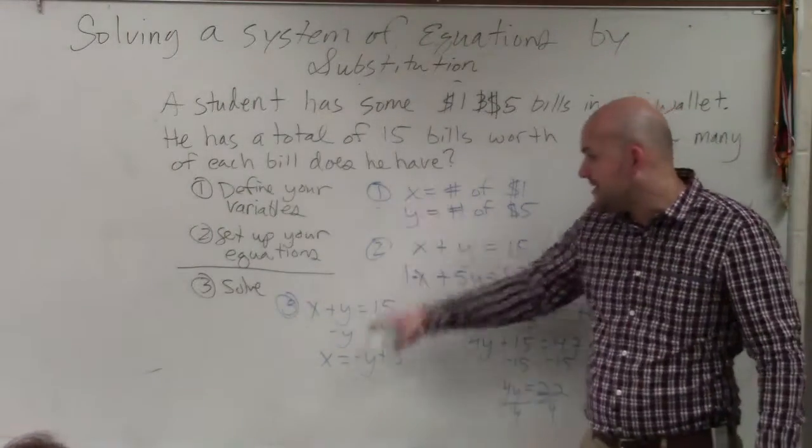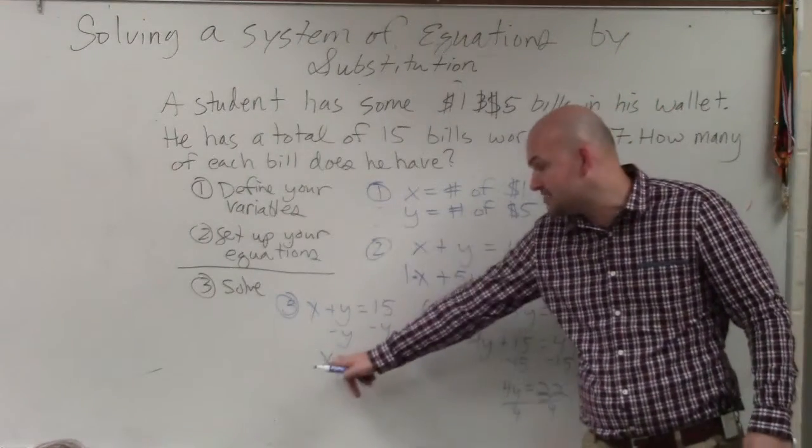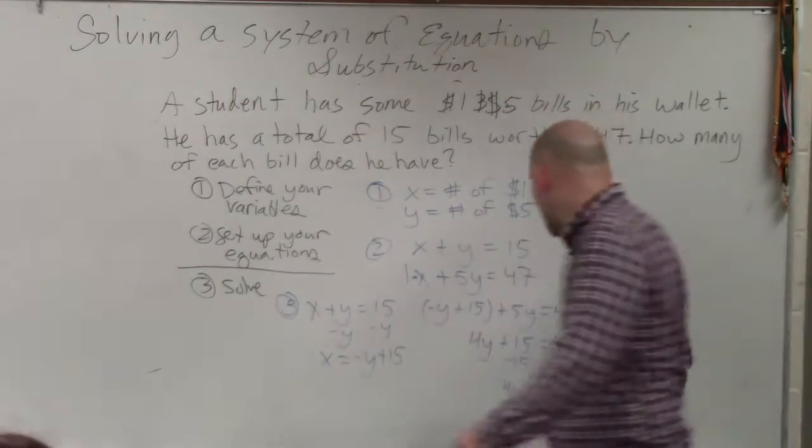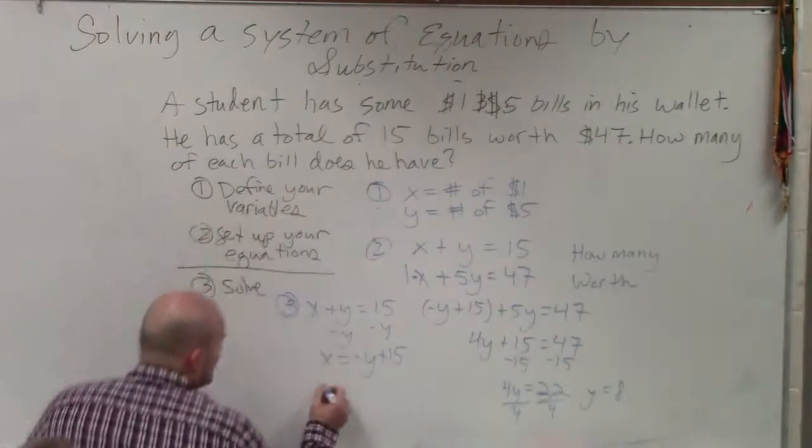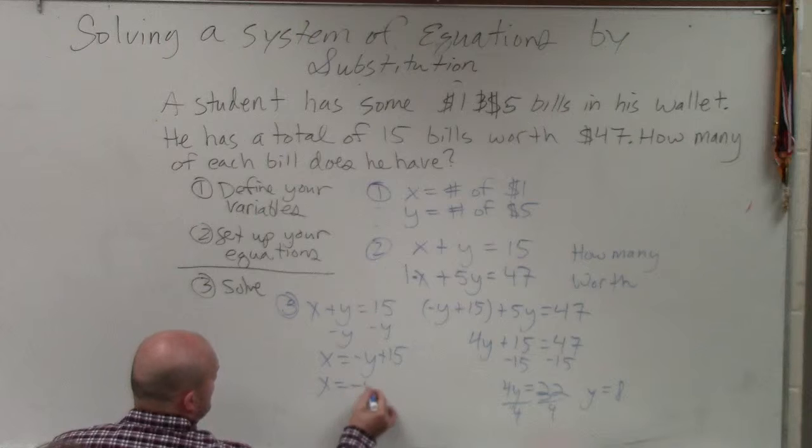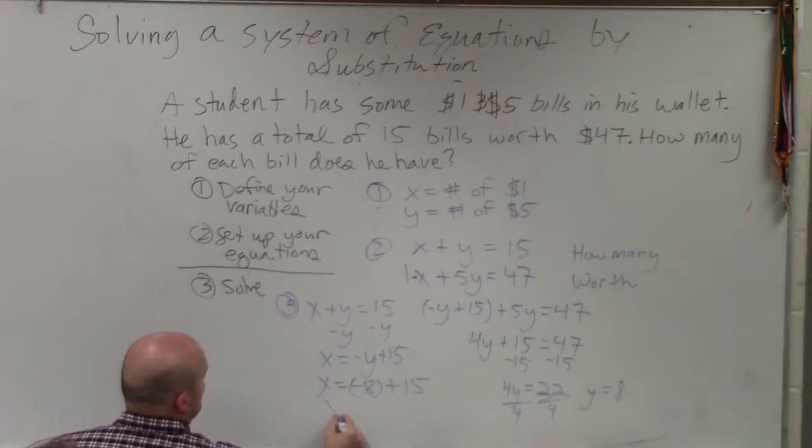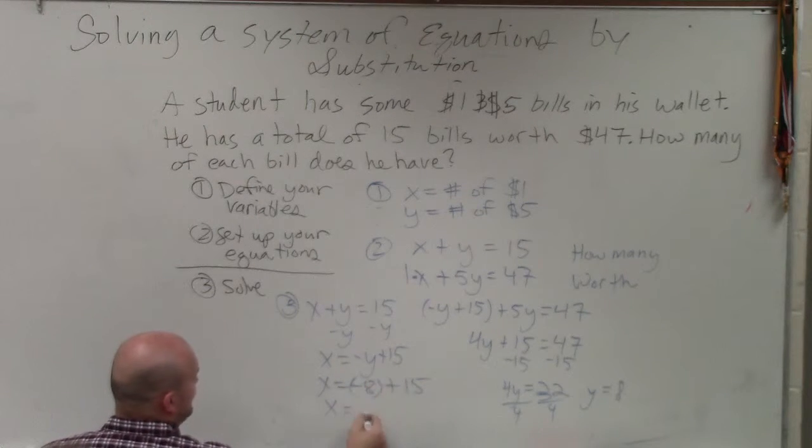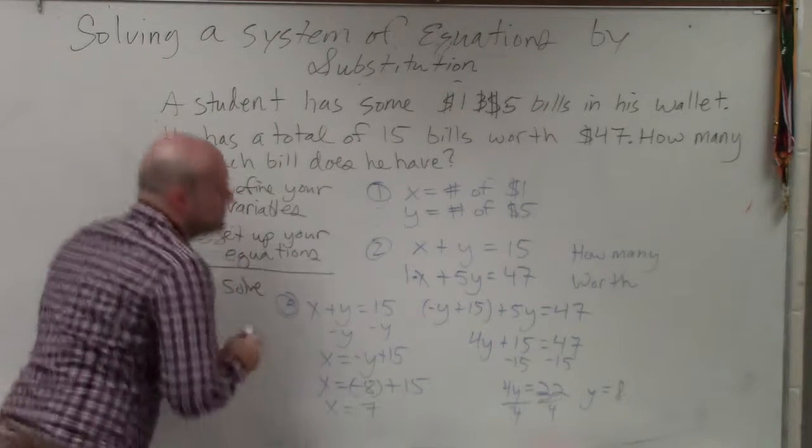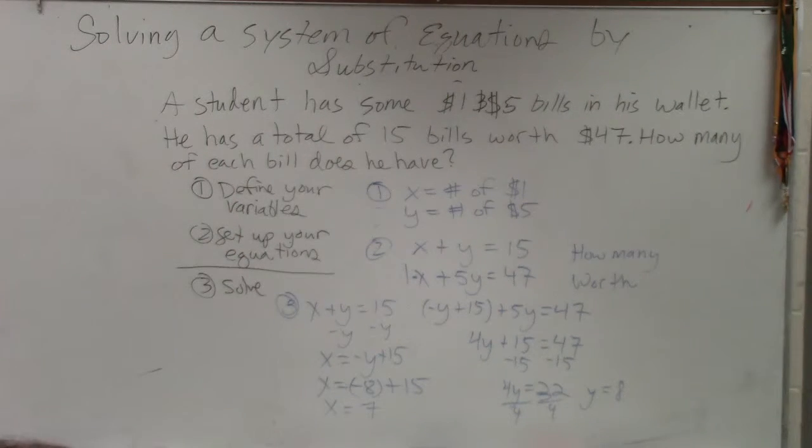To find out how many $1 bills there are, we have this equation where x is already isolated. So now I'll just take what y is and plug it into this equation. x equals negative 8 plus 15. x equals negative 8 plus 15 is 7. So you have seven $1 bills. And you would technically want to make sure you write that out.